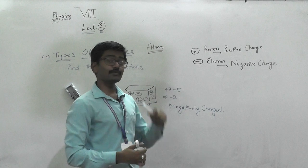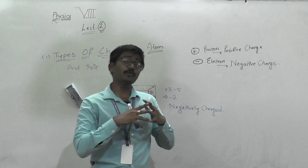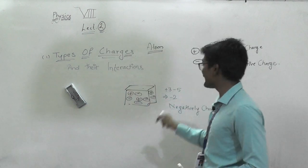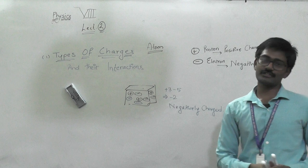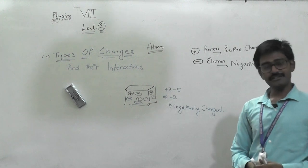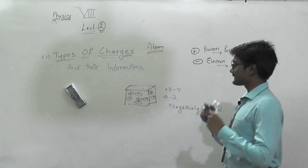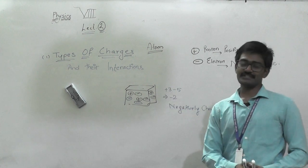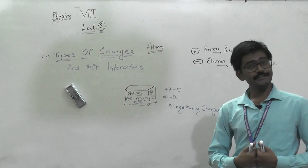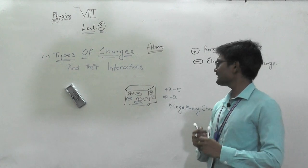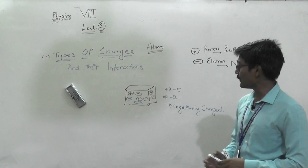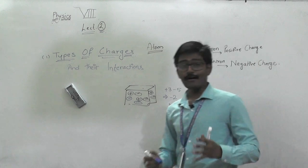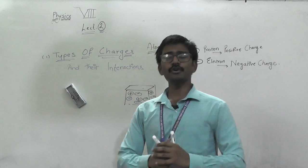So how do you make an object negatively charged? You have to add electrons upon it. Similarly, if you want to make a positive charge, what do you need to do? You may have to add protons.